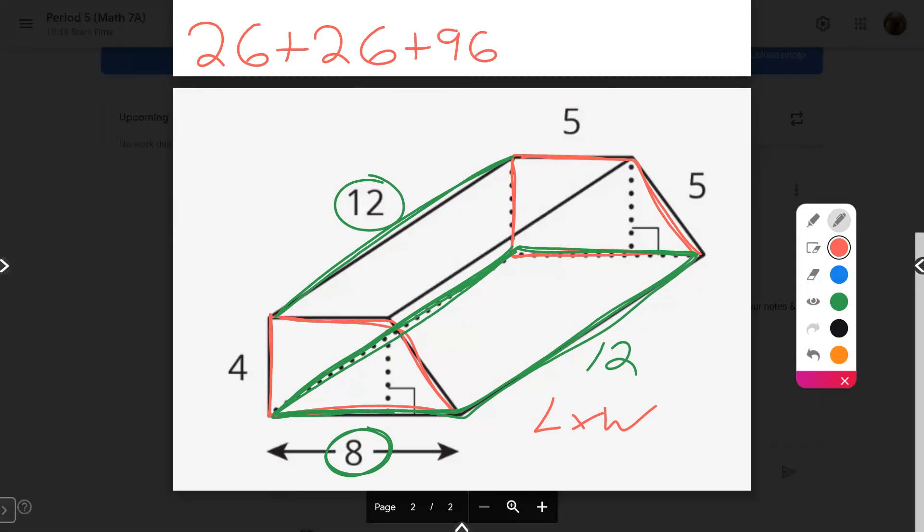So that was rectangle number one. Now remember, you've got three more rectangles to find the area for. The next rectangle to find the area for is this guy right here, the guy that's slanted on that right-hand side. So I've got to identify which numbers are associated with this guy. I've got a 12 here, and then I've got a 5 here. And now 12 times 5 is going to make 60. So two of my rectangles have been found. I've got two more left to work with.